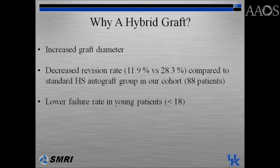A hybrid graft allows us to increase graft diameter. In our cohort of patients it also showed a decreased revision rate — 11.9% versus 28.3% — compared to the standard hamstring autograft group. It also showed a much lower failure rate in high-risk younger patients less than 18 years of age, who are more prone to graft failure.